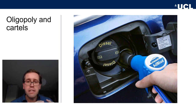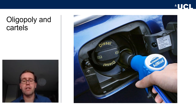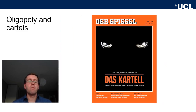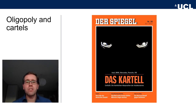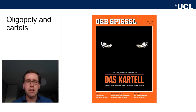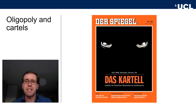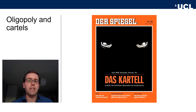Instead of competing on being environmentally friendlier than the competition, the car manufacturers coordinated the size of the tanks — they colluded and formed a cartel. This is an important example because it shows that cartels are not necessarily always just about price fixing; there are other things companies can coordinate on. This collusion on the size of the additive tanks is basically what triggered the Dieselgate scandal, when it came out that manufacturers had been systematically cheating using defeat devices that only activate emission cleaning when being tested.